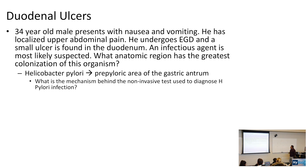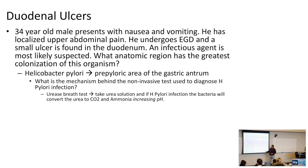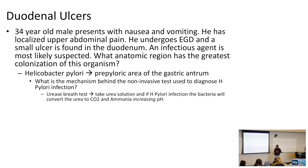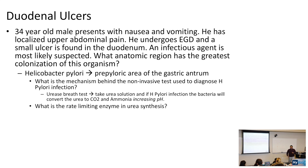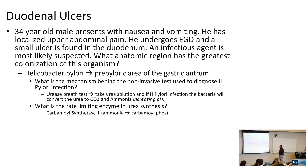The non-invasive test used to diagnose H. pylori is the urea breath test. Patients take a urea solution, and if H. pylori is present, the bacteria convert the urea to carbon dioxide and ammonia, which is detected in the breath. The rate-limiting enzyme in urea synthesis is carbamoyl phosphate synthetase 1, which converts ammonia to carbamoyl phosphate.